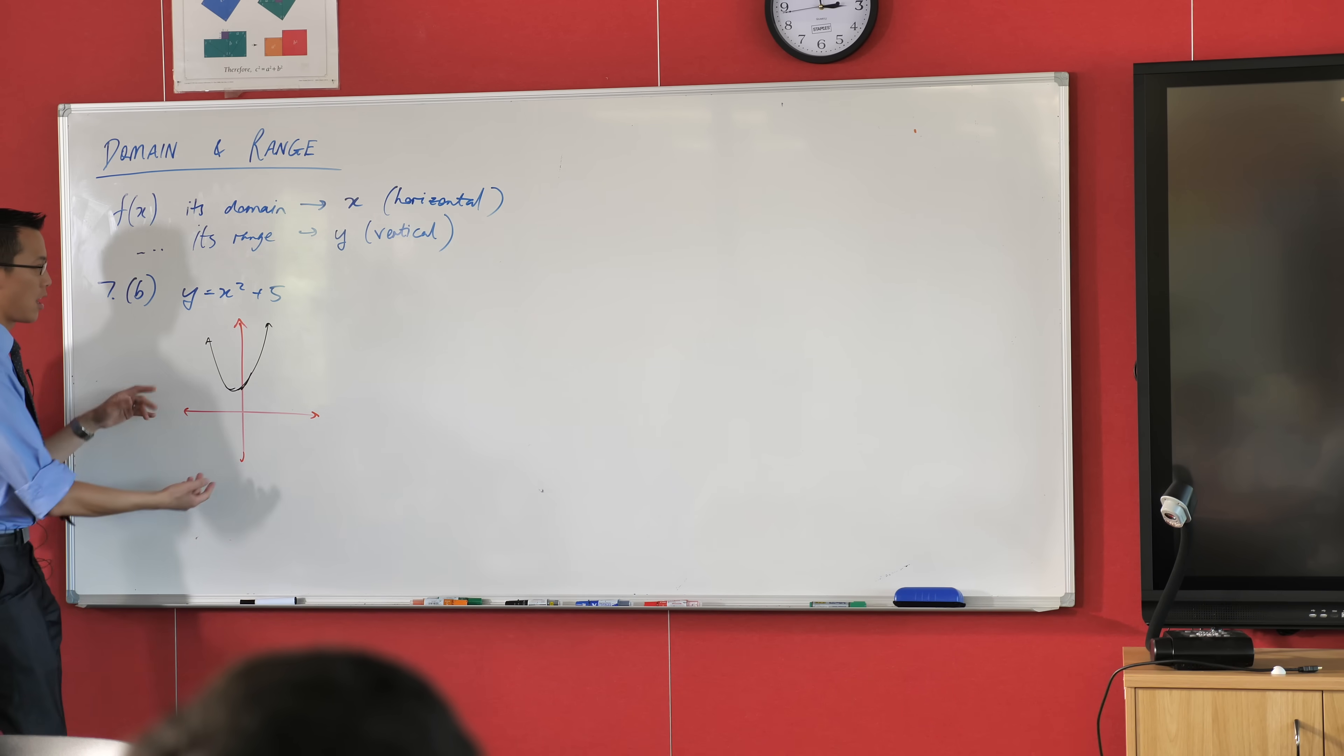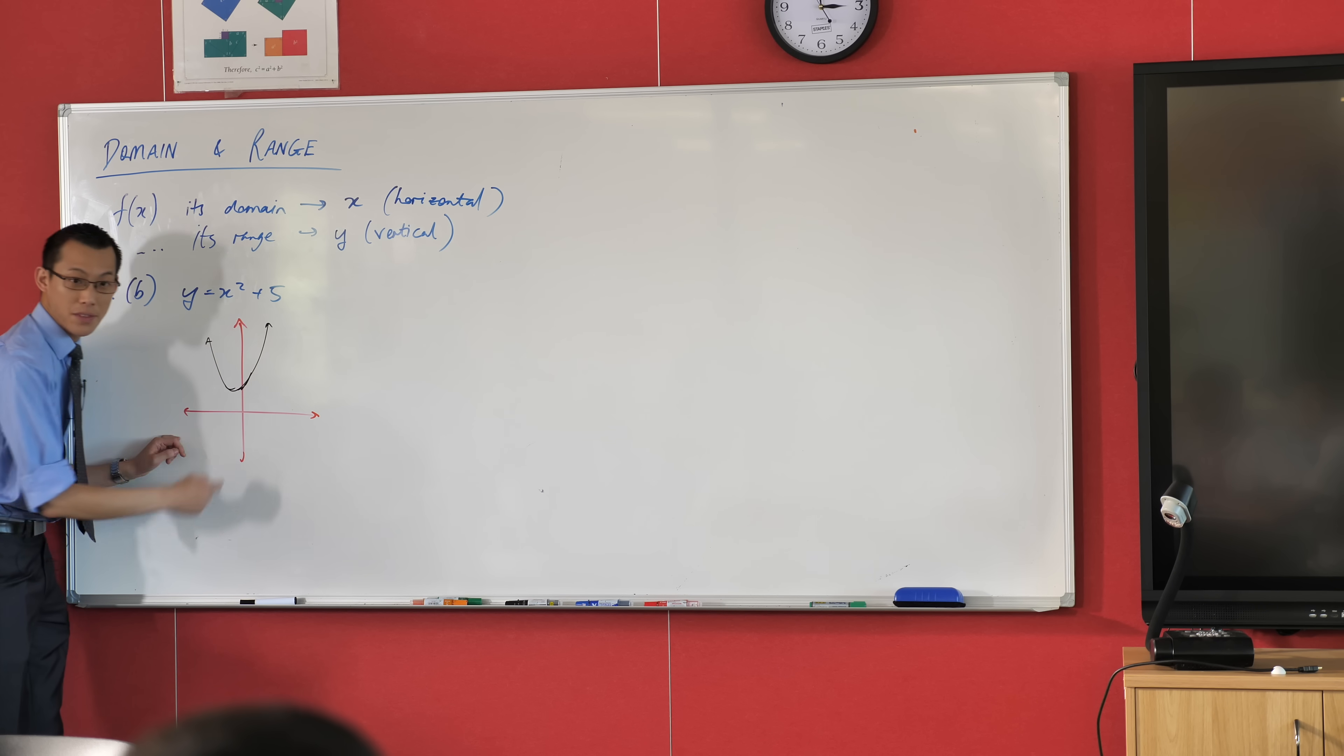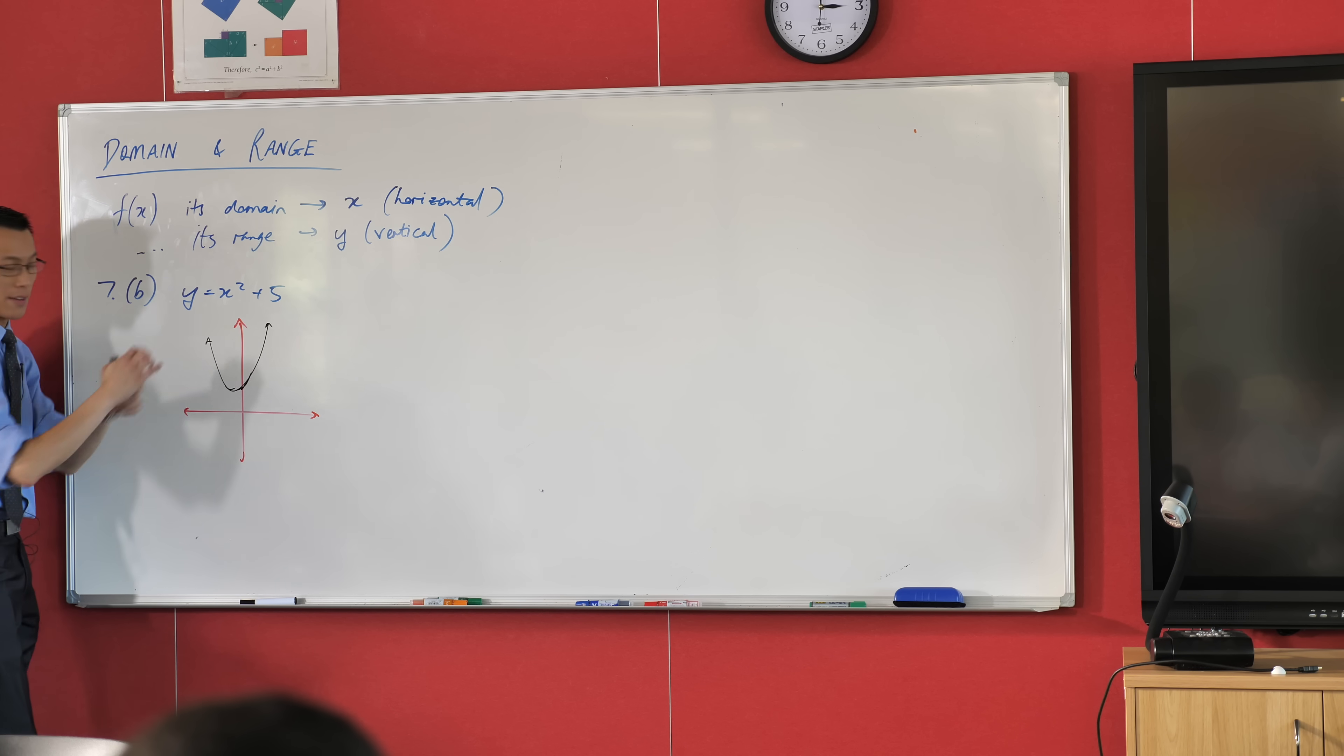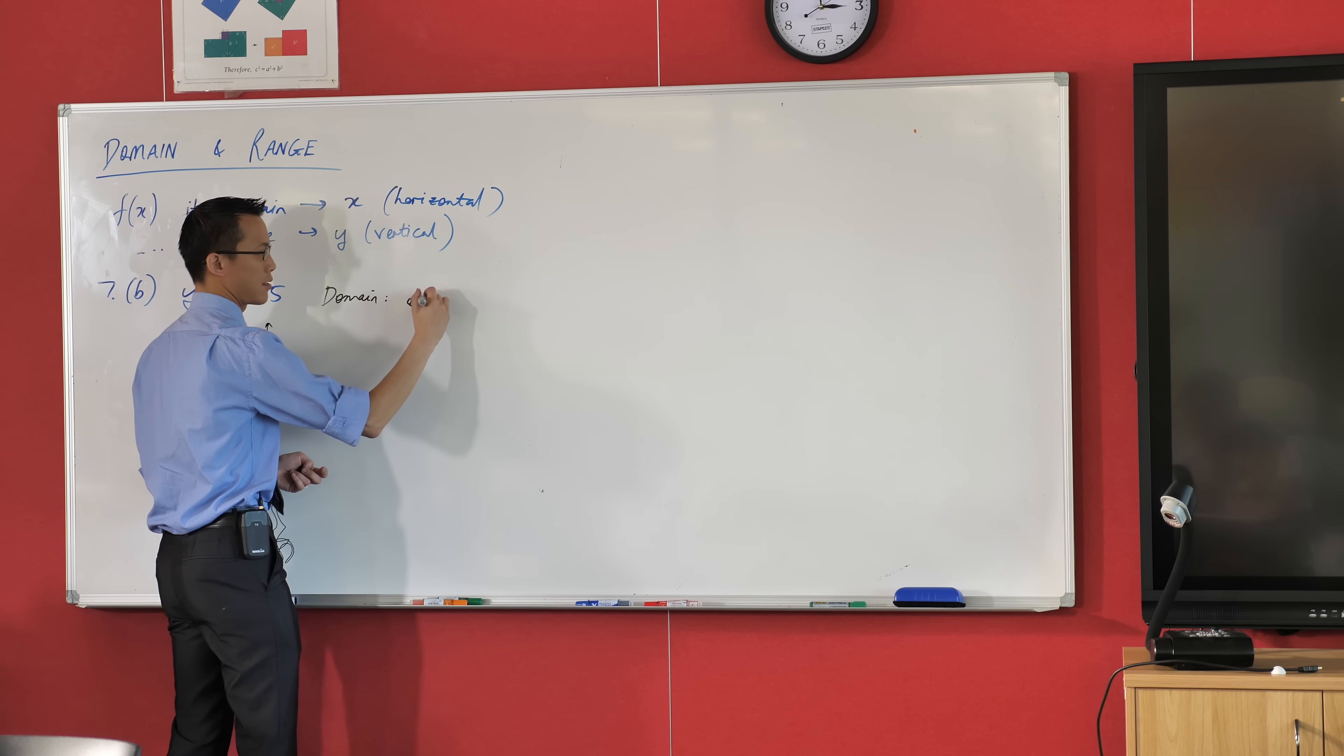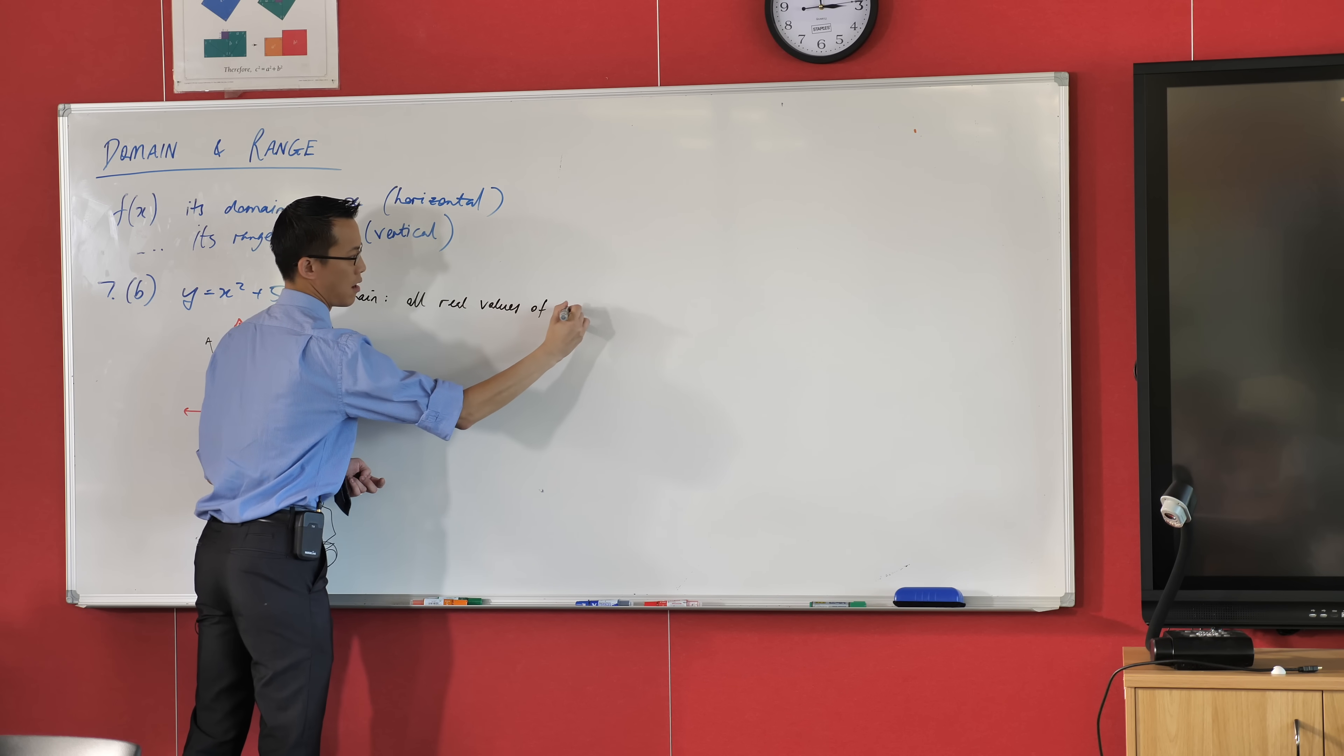Can we put decimals in? Let's try one. 1.1. 1.1 squared. It's 1.21 plus 5. It's fine. And that's why this graph doesn't have any holes in it. So I can put anything I like in here in terms of x, which means the way I would say this is the domain. I'd love you to write this with me. The domain of this particular function is, and you can say this in lots of ways, but the way I'm going to encourage you to say it is all real values of x.